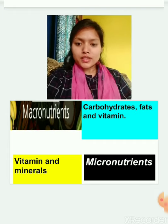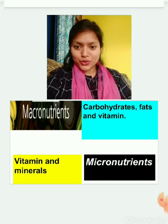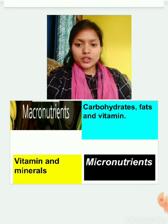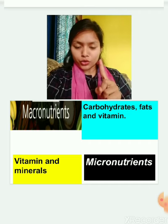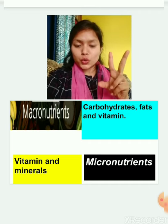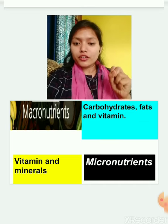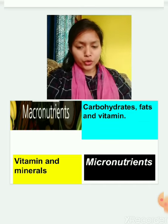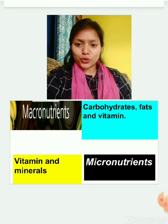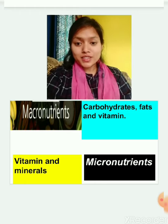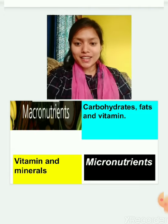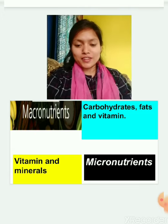So vitamins and minerals are called micronutrients. Nutrients are of two types: macronutrient and micronutrient. Macro means large quantity, so carbohydrate, fat, and protein are macronutrients. Vitamins and minerals are micronutrients. Today we will study about these micronutrients only — that is vitamins and minerals. So let's begin.